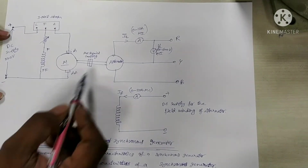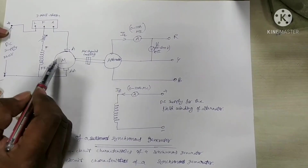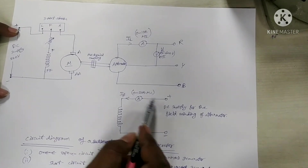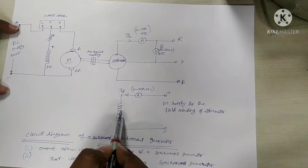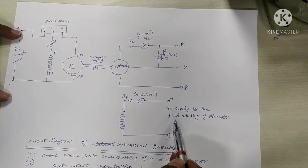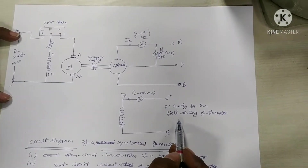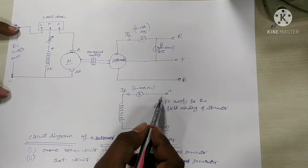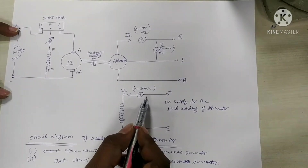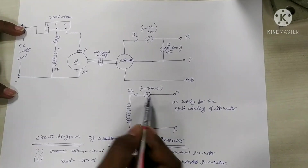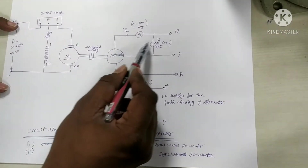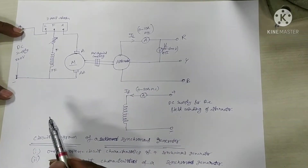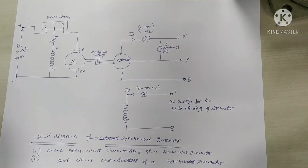The rotor of the alternator and the DC shunt motor shaft are both mechanically coupled. The rotor of the alternator has a field winding which is excited with DC supply. We are going to take this DC supply from the auto transformer through a bridge rectifier, and we are going to vary this field current by varying the single phase variac. The stator terminals of the alternator are connected, and one voltmeter is connected across any two terminals of the alternator for measuring the induced EMF.